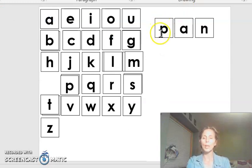We're going to start with the word pan. If you look here, P says puh, A says a. We blend those together, it says pa. And then the last sound is nn, so we blend it together. Pan. The word is pan.